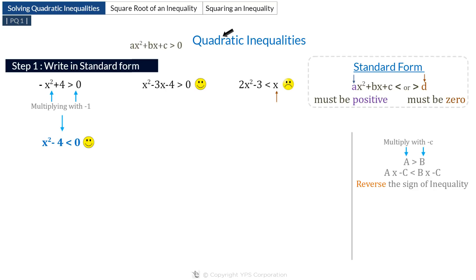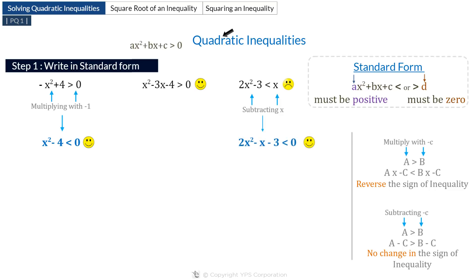Now for 2x squared minus 3 is less than x: subtracting x from both sides of the inequality doesn't change it, so we get 2x squared minus x minus 3 is less than 0. This inequality satisfies both conditions of the standard form.